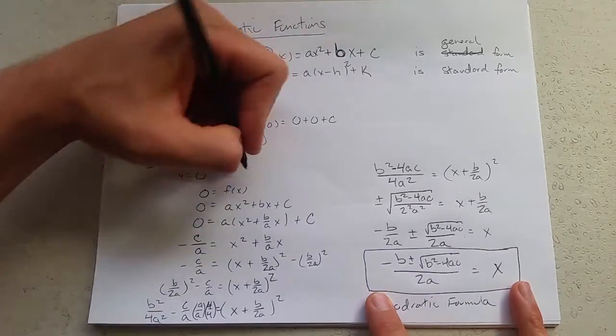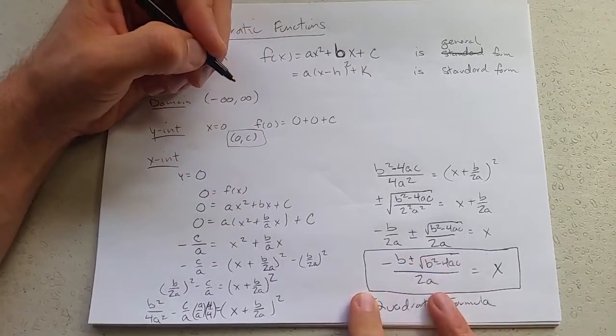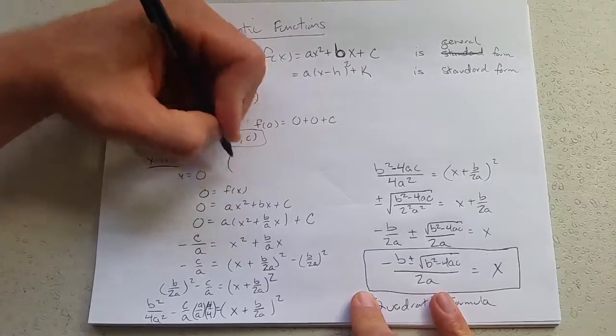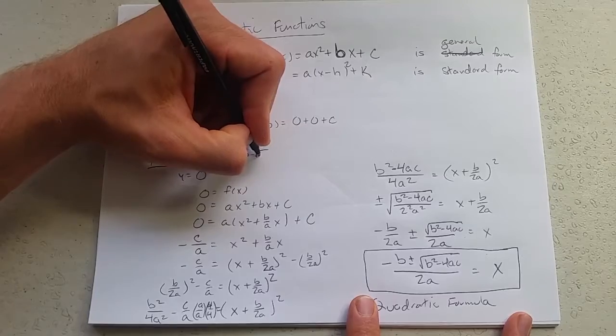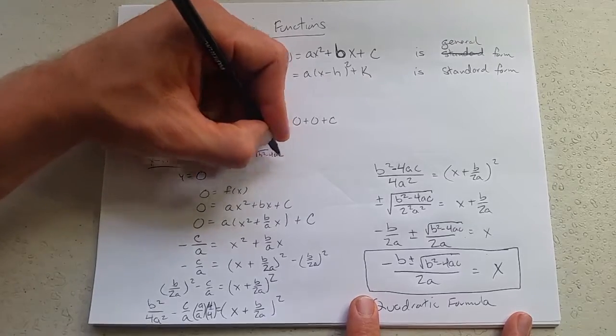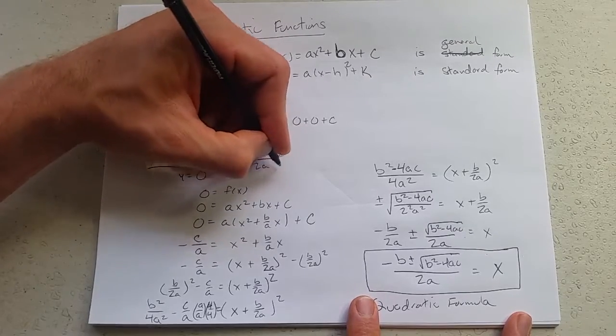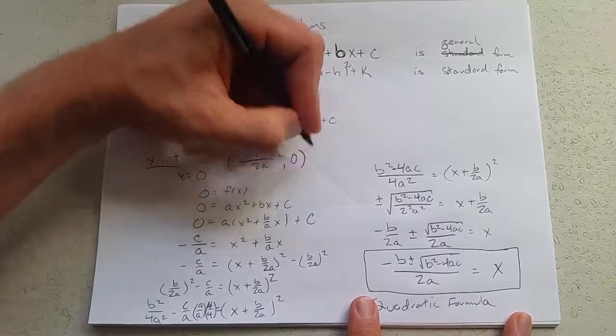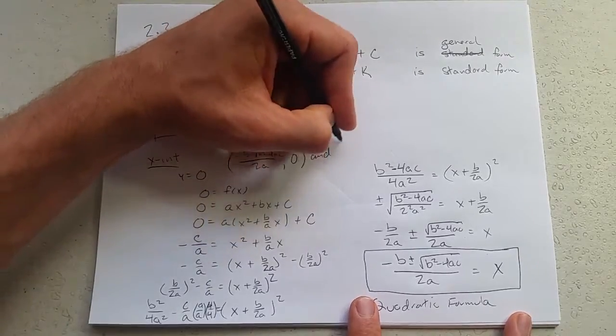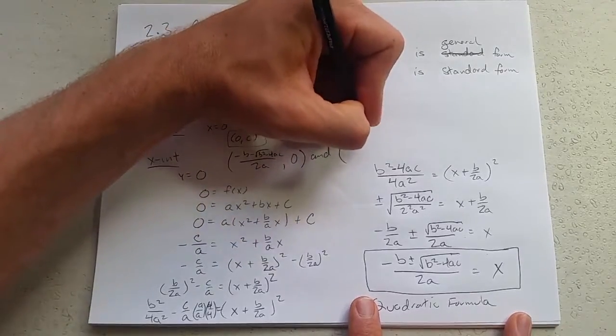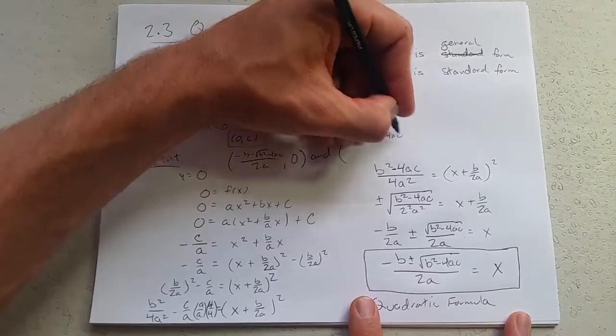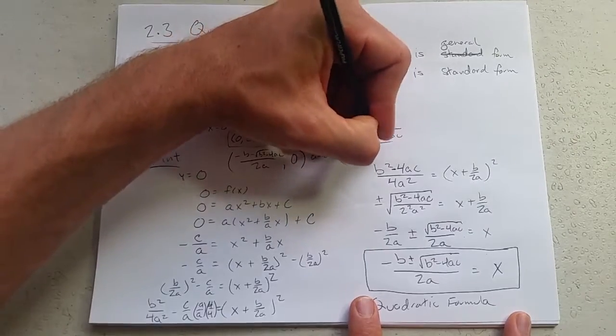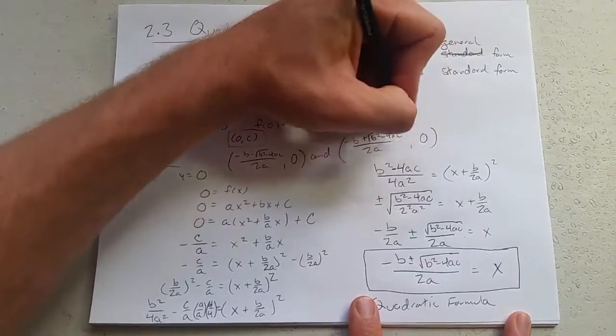So what do the x-intercepts look like? This number right here, there's actually two numbers hiding in here. So one of them is negative b minus square root (b squared minus 4ac) all over 2a, comma zero. And negative b plus square root (b squared minus 4ac) over 2a, comma zero.